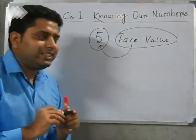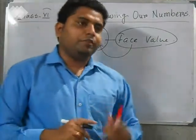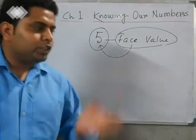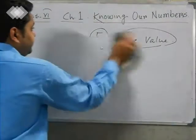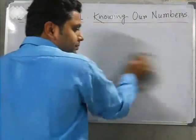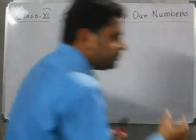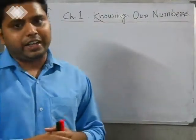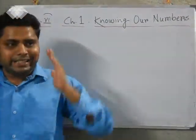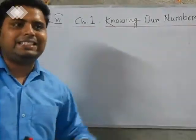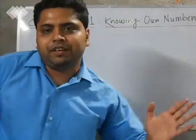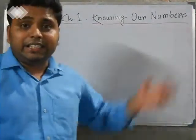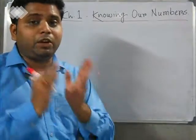Now I will discuss place value. Before that, we have to know the numeration system. There are two kinds of numeration systems: the first is the Indian system of numeration, and the next is the international system of numeration. Let's see what is the Indian system of numeration.